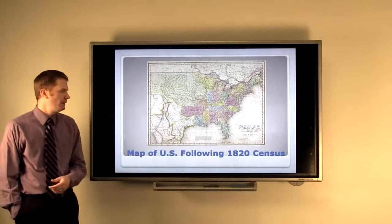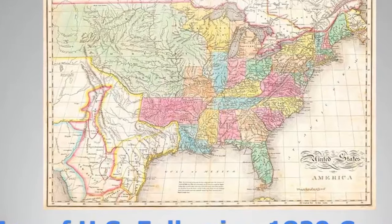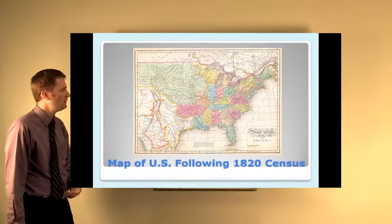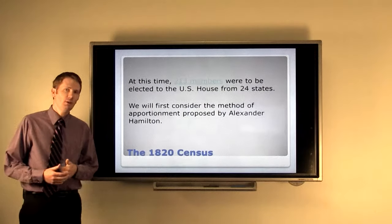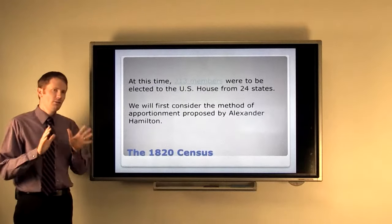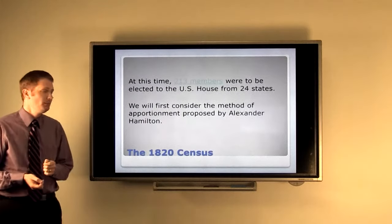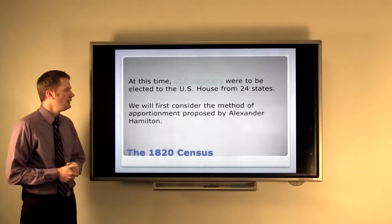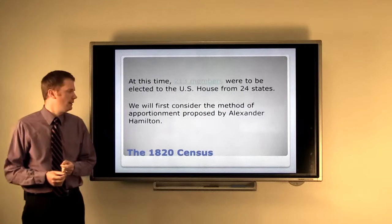So, we're going to look at a particular case in history. This is the map of the United States following the 1820 census. You can see the land boundaries very similar to what we know today, but the shadings and the colorings here are quite different. In fact, everything kind of west of Louisiana, Missouri is some sort of territory and not yet a state. There were 24 states at this time and we were to apportion 213 members to the House of Representatives following the 1820 census. Now, we're going to use the data from the 1820 census, but the first method we're going to talk about was actually proposed by Alexander Hamilton back with the very first census in 1790. He proposed a method that today is called the Hamilton method and it's probably the easiest method to apply. We're going to start there.